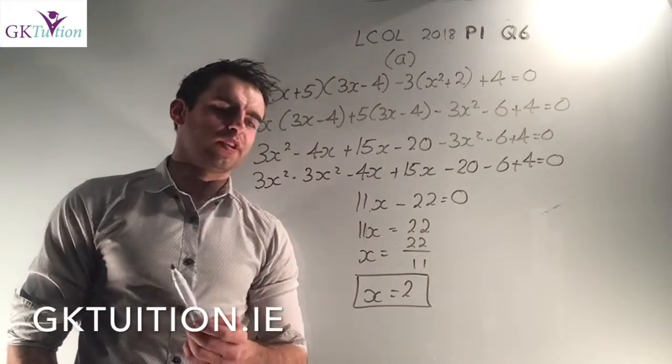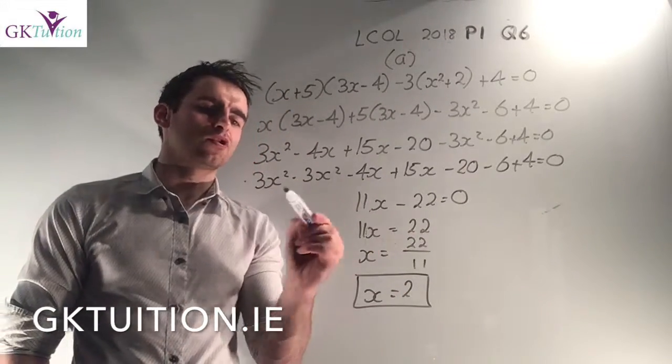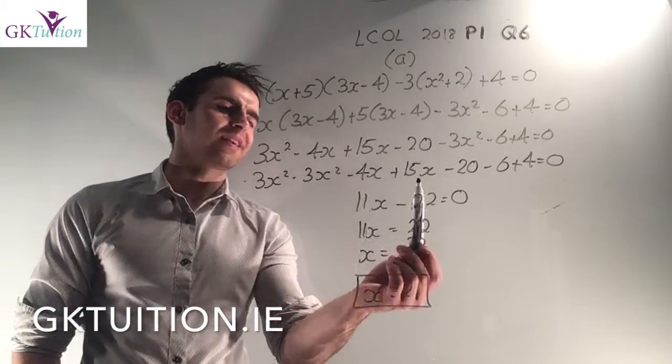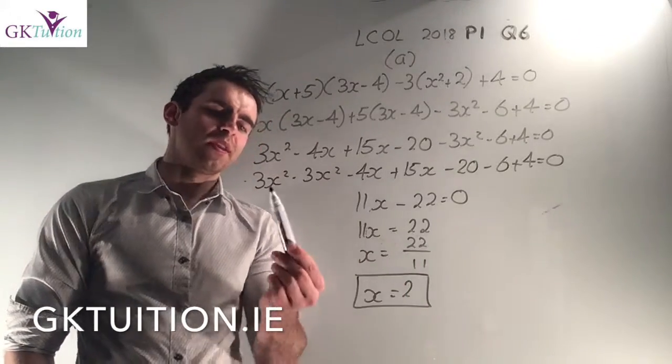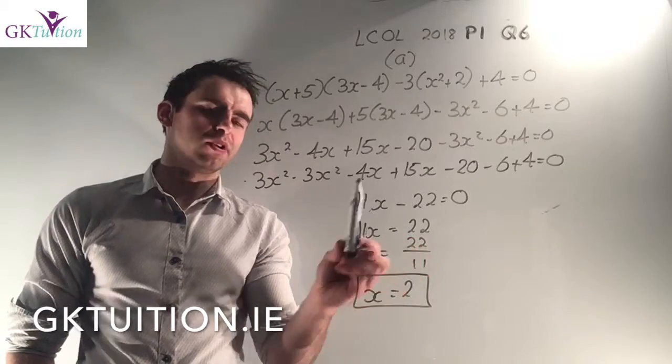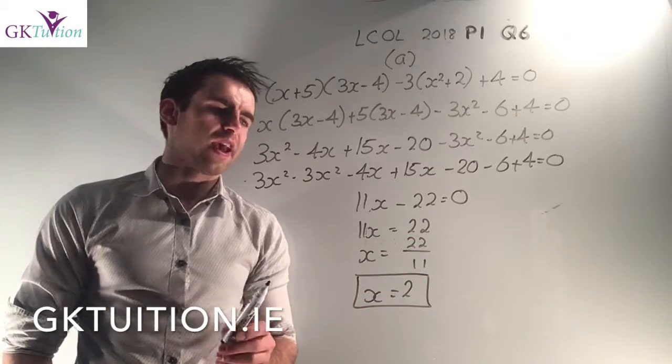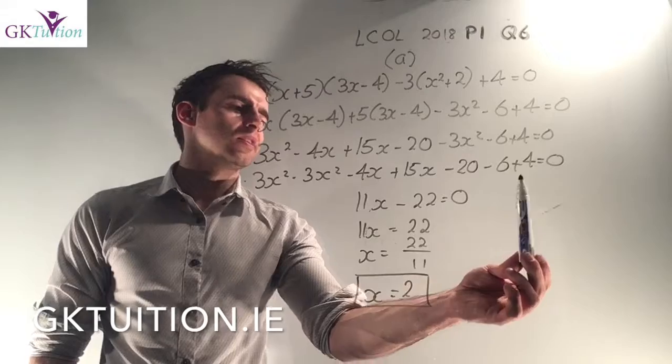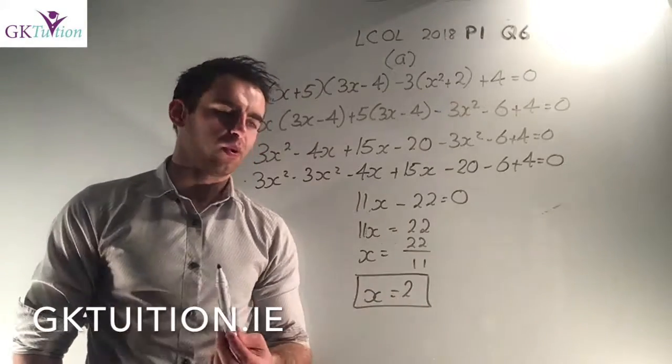And I've just listed those three terms. On this line I've just grouped my x squareds together, my x's together and my numbers together. The x squareds I've plus 3 minus 3, they cancel each other out. I've -4x plus 15x which is +11x. I've -20 -6 +4 which is -22.